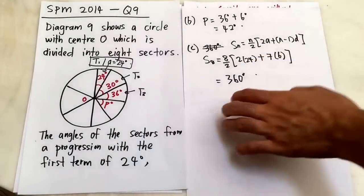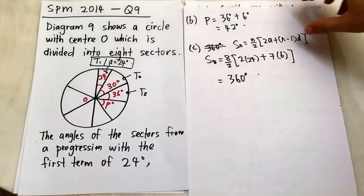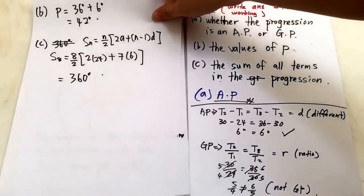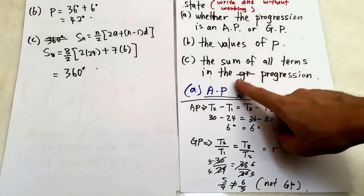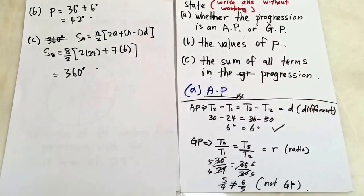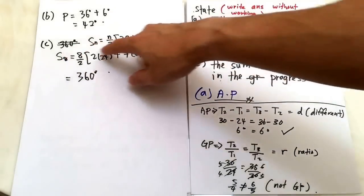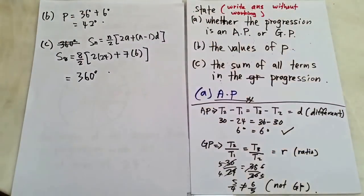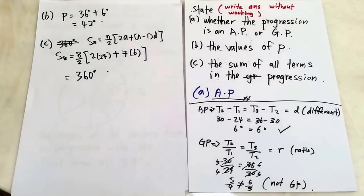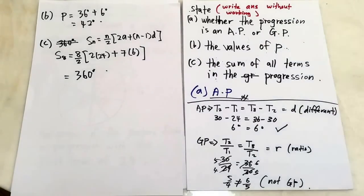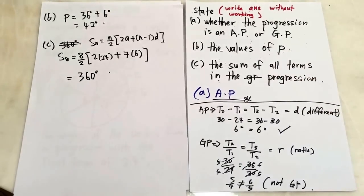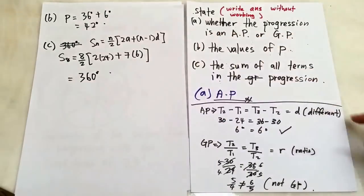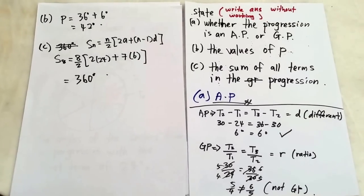For part C, since it asks you to state the sum in the progression, I recommend showing this working rather than just writing 360 directly. Normally, you need to show working for questions worth more than one mark. The purpose of this video is to help you understand — in the real exam this might be a 2 or 3 mark question, so show your working.